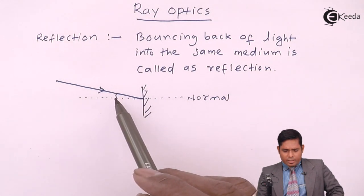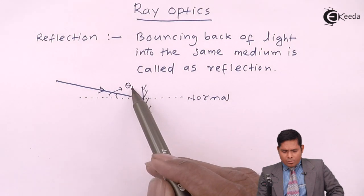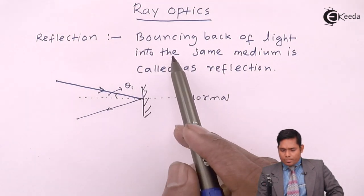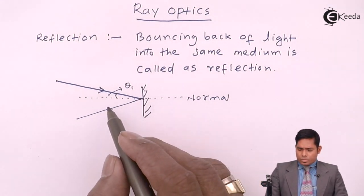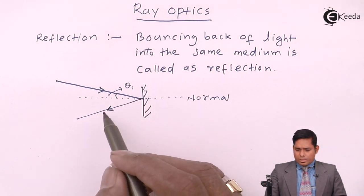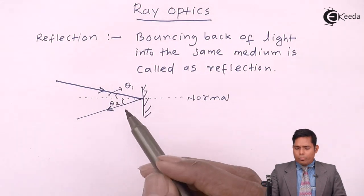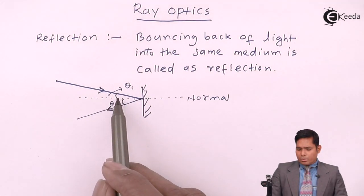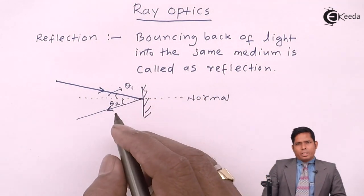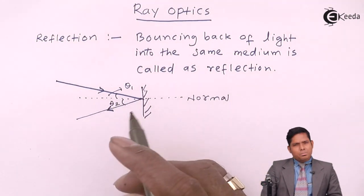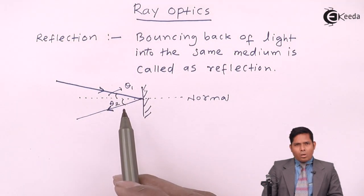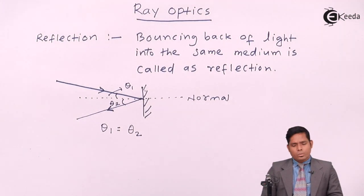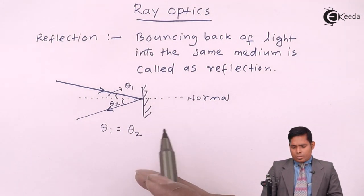According to the law of reflection, suppose the angle of incidence is theta one. The light will get reflected and bounce back to the same medium, making an angle theta two with the normal. The angle is always measured with respect to the normal — this is the first point. The angle is always taken as positive. The law of reflection says that the angle of incidence theta one must be equal to the angle of reflection theta two. This is what reflection is all about.